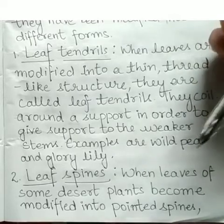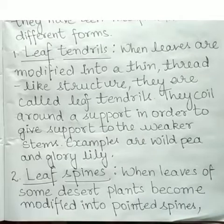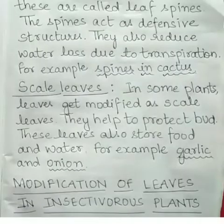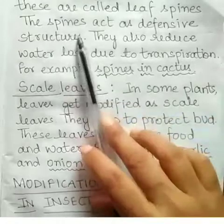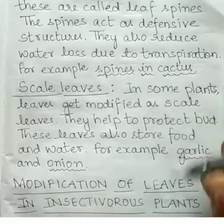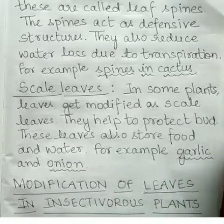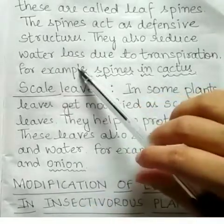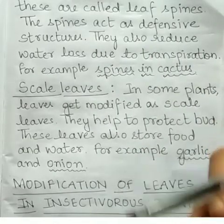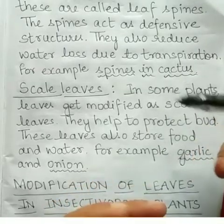Some leaves modify themselves into spines — pointed structures. When leaves of desert plants become modified into pointed spines, they are called leaf spines. These spines act as defensive structures, keeping away grazing animals and enemies. They also reduce water loss due to transpiration, the process by which water changes into water vapor from the surface of leaves.